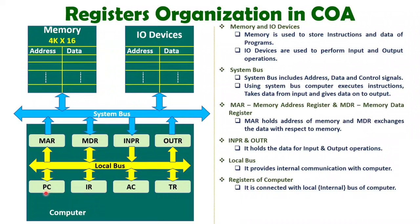PC means program counter, which holds the address of the next instruction. IR means instruction register. AC means accumulator. TR means temporary register. To execute an instruction, the address must be held by the program counter, which gives that address to the memory address register. The memory address register is directly connected to the memory address lines. Once the computer gives a memory read signal, the instruction at that address comes inside the memory data register, and in the next cycle it moves into the instruction register.